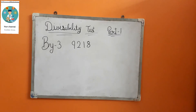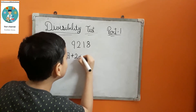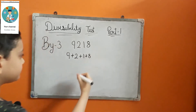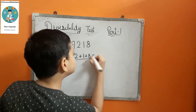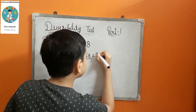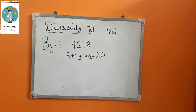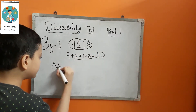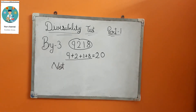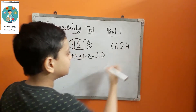In divisibility by 3, we have to find the sum of all digits. For example, 9 plus 2 plus 1 plus 8 equals 20. Since 20 does not come in the table of 3, this number is not divisible by 3.